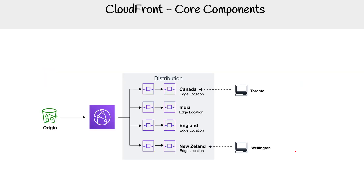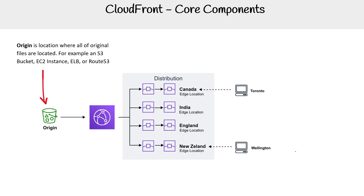For core components, the way it works is you have an origin — this is the location where all of the original files are located. This could be an S3 bucket, EC2 instance, an ELB, or Route 53. Then we have edge locations.